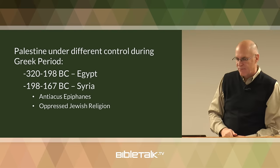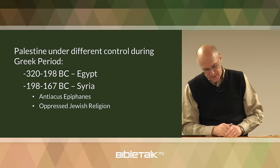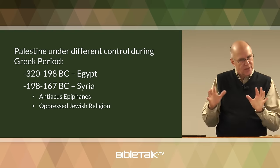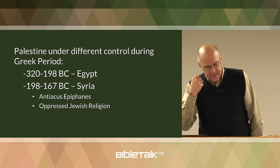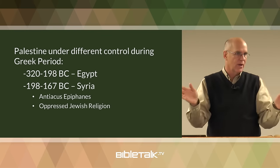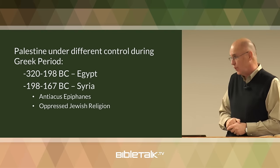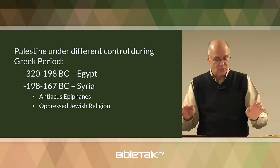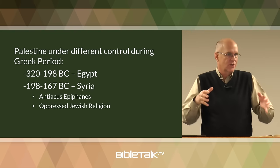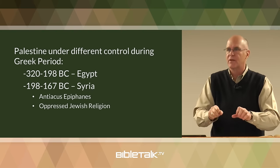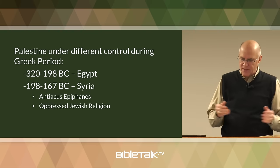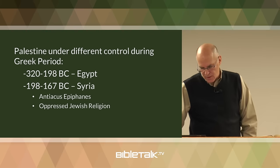From 198 to 167 BC, Syria was in control of Palestine. One king in particular — Antiochus Epiphanes — was really trying to destroy and demoralize the Jewish people. He closed the temple, went in and sacrificed a pig on the altar to desecrate it, and forbade circumcision. He was trying to destroy the people not just economically, but psychologically by destroying their religion. It was a time of great depression and great trouble for the people of Judah.